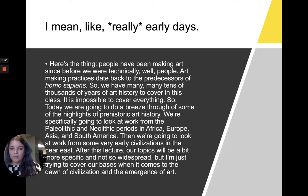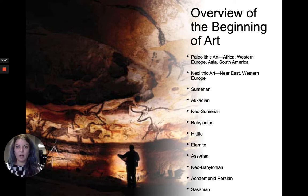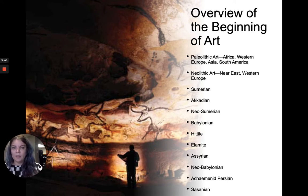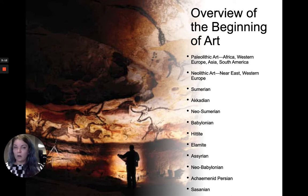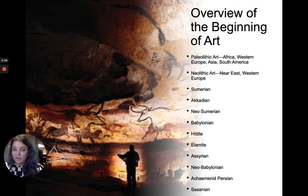Let's look at the dawn of civilization and the emergence of art. This lecture and the next Neolithic lecture are going to cover: Paleolithic art in Africa, Western Europe, Asia, and South America; Neolithic art in the Near East and some Western Europe; and early civilizations in the Near East including the Sumerians, Akkadians, Neo-Sumerians, Babylonians, Hittites, Elamites, Assyrians, Neo-Babylonians, Achaemenid Persians, and Sassanians. So kind of a lot of people to cover.